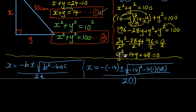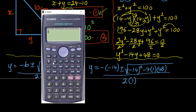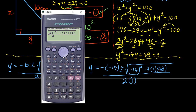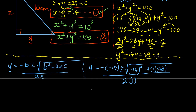Applying the formula in terms of y: y equals minus negative 14 plus or minus square root of negative 14 squared minus 4 times 1 times 48, all divided by 2 times 1. The calculator gives the first answer: y equals 8. Then using the minus gives the other answer: y equals 6. So I've got two values of y: y equals 8 or y equals 6.